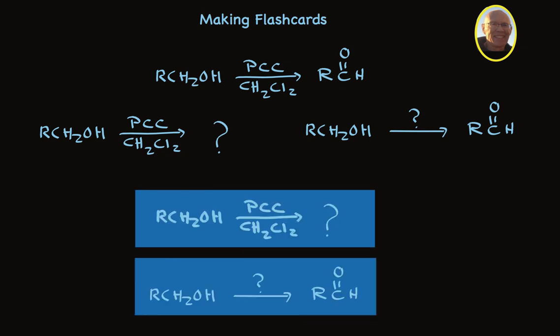Make a single card. On the front, put the same kind of information you did before, but on the back, in addition to putting the product, write the other question. So you'll repeat the starting material, but this time, leave off the reagents and conditions.